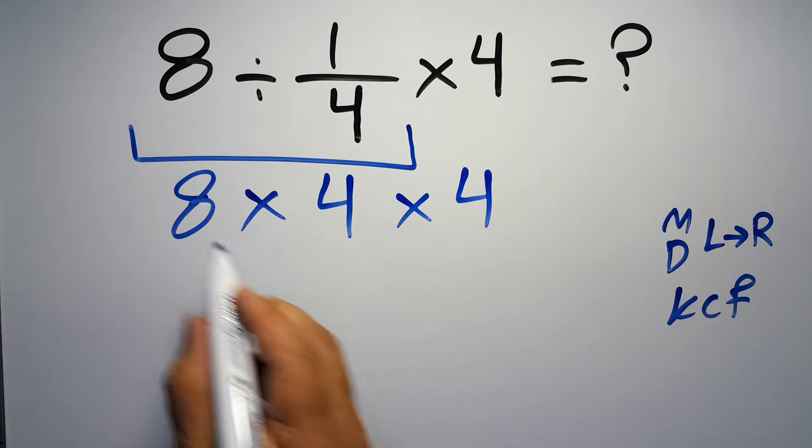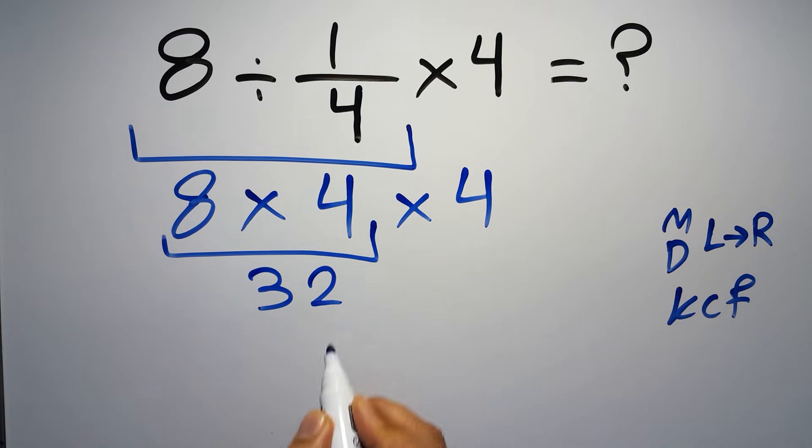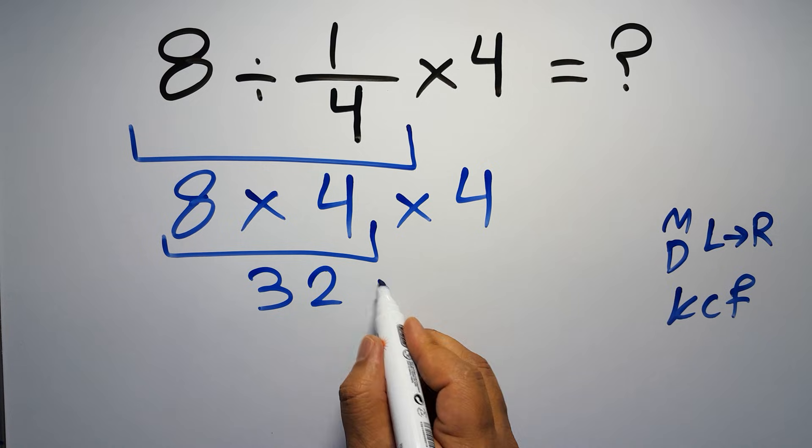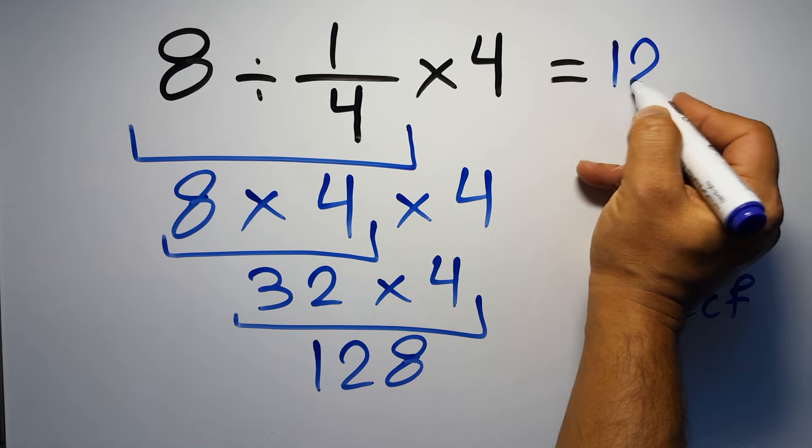So 8 times 4 times 4. 8 times 4 gives us 32, and 32 times 4—4 times 2 gives us 8 and 4 times 3 equals 12—so we have 128. This is our final answer to this problem. The correct answer is 128.